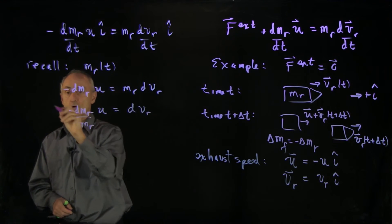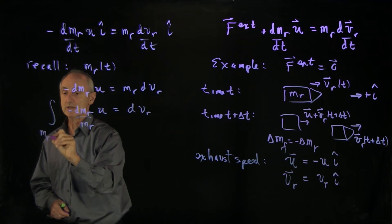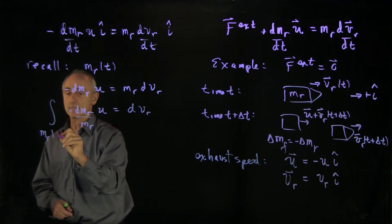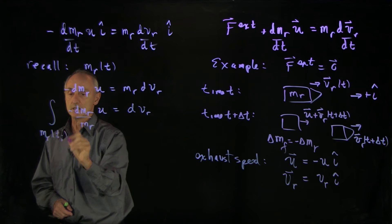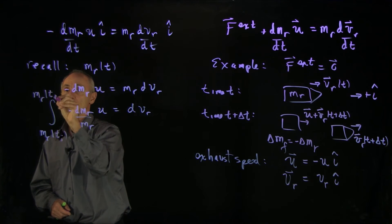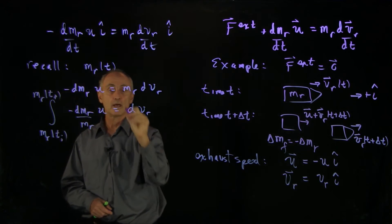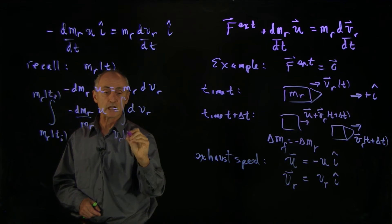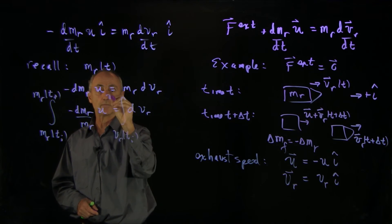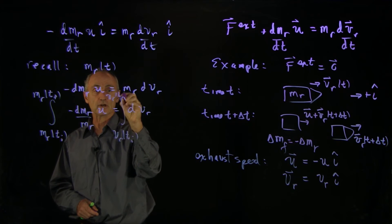Now, when we integrate, we're going to be integrating mass of the rocket at some initial time t_initial to mass of the rocket at some final time. And over here, we're going to be integrating the velocity from some initial time to some final time.